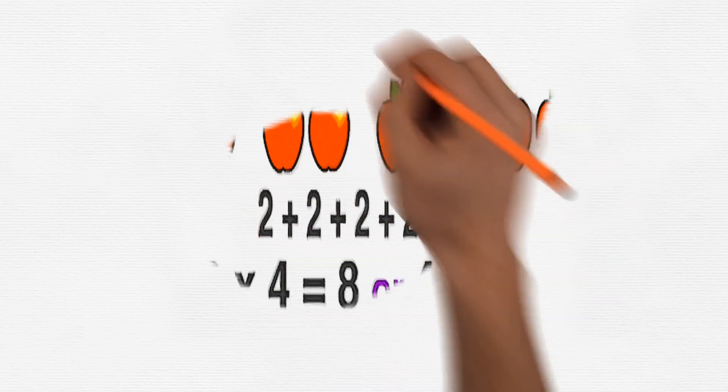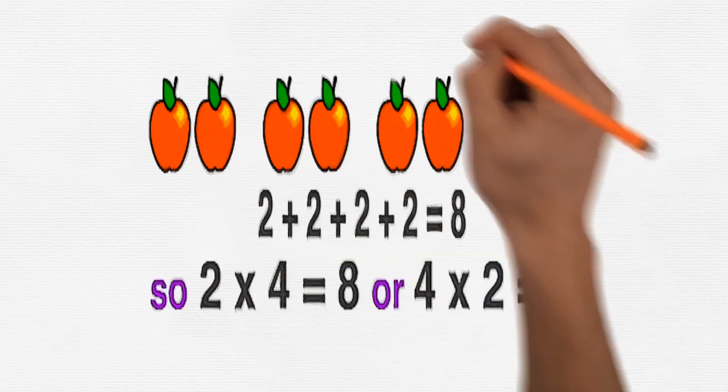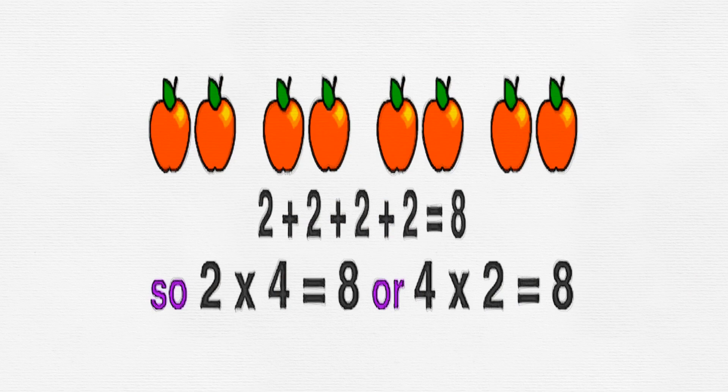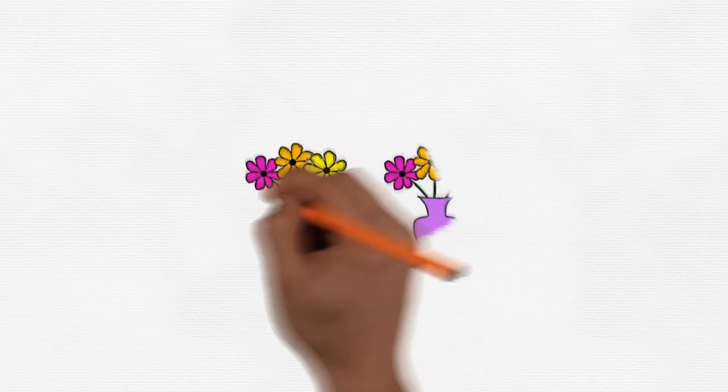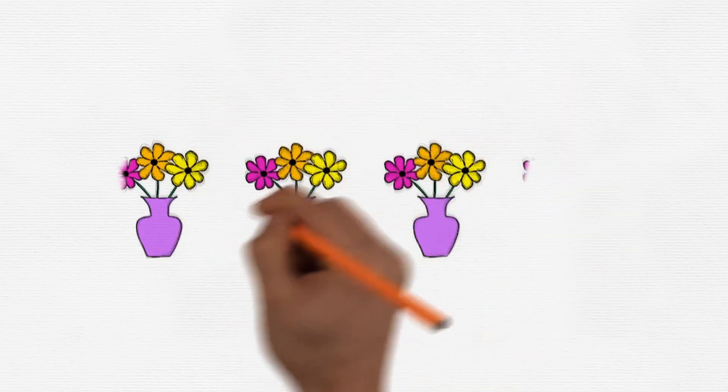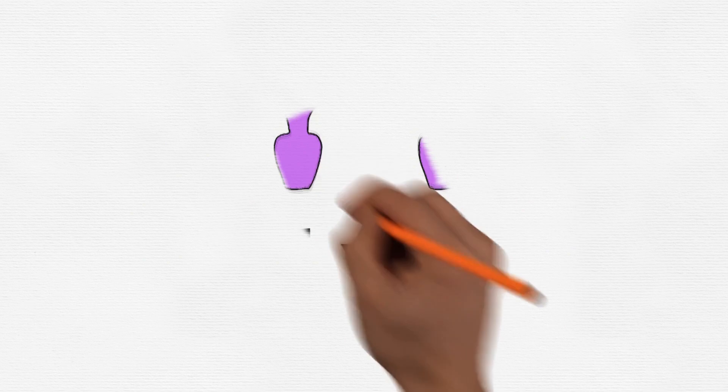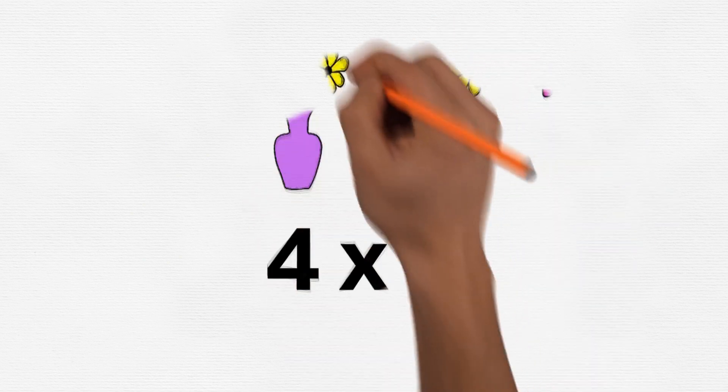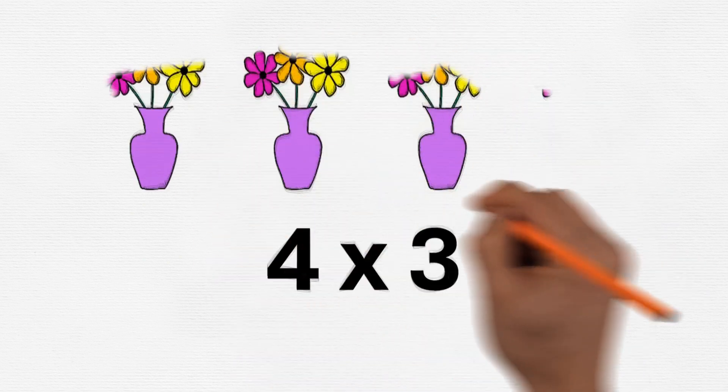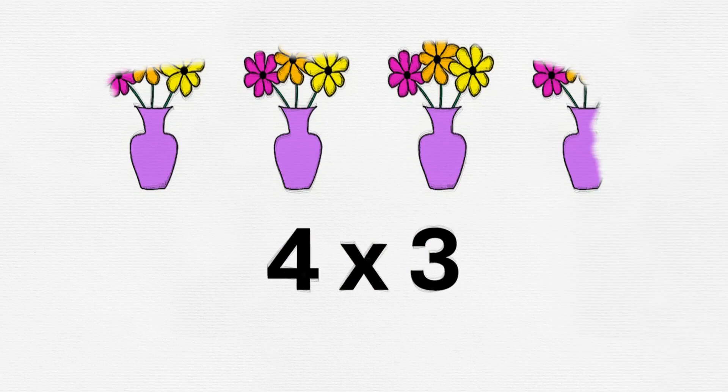Now it's time for us to be multiplication explorers! We're going to look at different groups of things and figure out the magical multiplication sentence. Look at these four groups of flowers. Can you tell me the magical multiplication sentence for this? You got it! It's four times three, or four multiply by three. You're becoming multiplication masters!